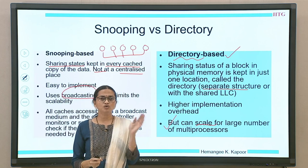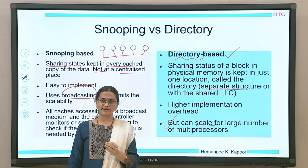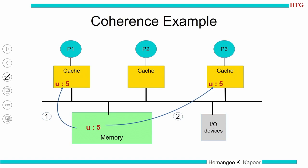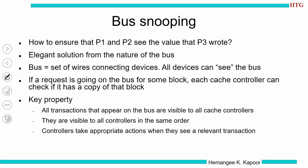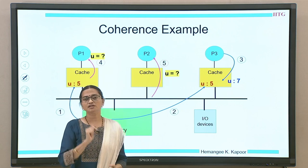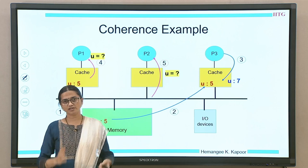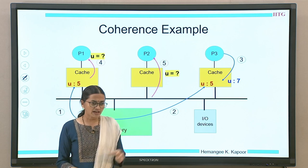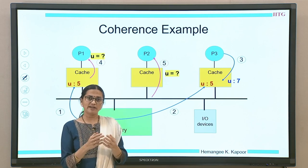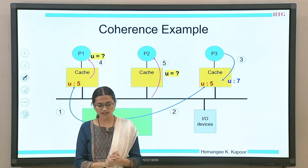To summarize the difference: snooping stores states with the local caches using a broadcast medium, while directory stores state in a centralized location. In this lecture, we will focus on snooping protocol implementation first, then look at different snooping protocols, and then tackle the directory data structure. The coherence problem: P1 and P2 read U, then P3 modifies U — how will P1 and P2 know the new value?